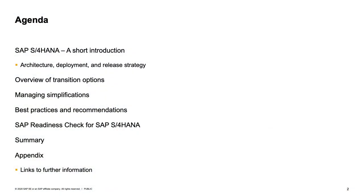Let's talk about the agenda. SAP S/4HANA is a different product, so I will give a short introduction to the differences between SAP S/4HANA and the ERP system you may know — covering the architecture, functional scope, deployment options, and release strategy.